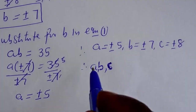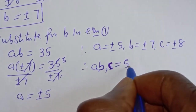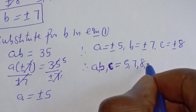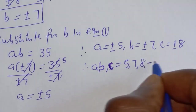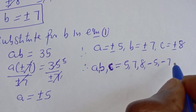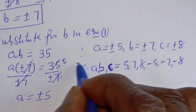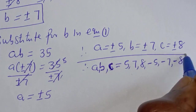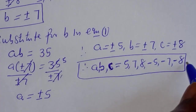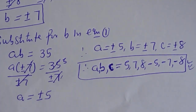The final answers are: (A, B, C) is equal to (5, 7, 8) or (−5, −7, −8). This is the final answer. Before you leave, please like, share, comment, and subscribe. Thank you, bye bye.